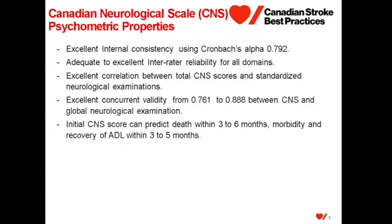The Canadian Neurological Scale has been found to have strong psychometric properties. It has excellent internal consistency in all domains using Cronbach's Alpha, adequate to excellent inter-rater reliability for all domains, excellent correlation between the total CNS score and standardized neurological examinations, and excellent concurrent validity between the CNS and the global neurological examination. The initial CNS score was found to have predictive validity — it could predict death within three to six months, morbidity, and recovery of activities of daily living within three to five months.